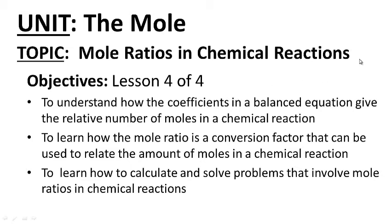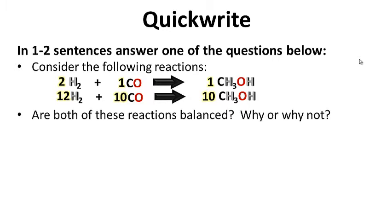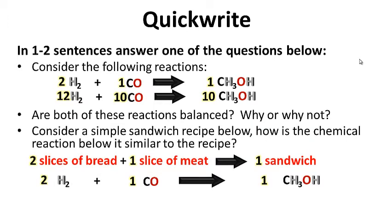For your quick write, consider the following reactions. Are both of these reactions balanced? Why or why not? Then consider a simple sandwich recipe — how is the chemical reaction below it similar to the recipe above? Go ahead and pause this while you do your quick write.